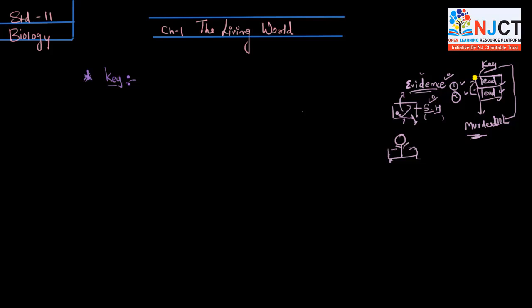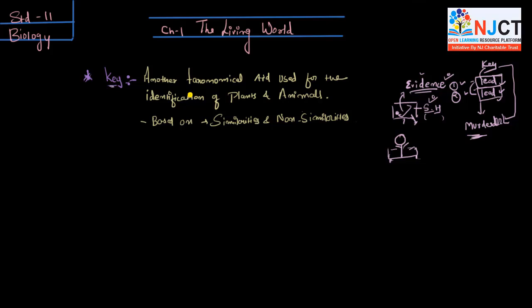So what is key? When you see the definition, it is another taxonomical aid. We have already talked about taxonomical aids - the museum, the parks. We are studying animal and plant specimens because they are taxonomical aids.